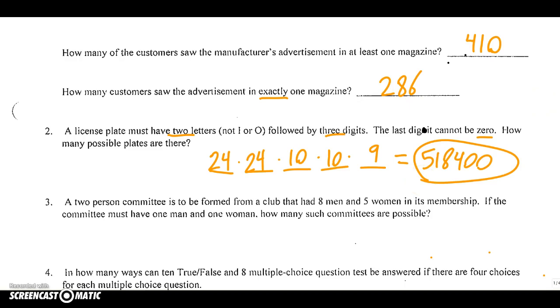Number three, a two-person committee is to be formed from a club that had eight men and five women in its membership. If the committee must have one man and one woman, how many such committees are possible? Please underline the word committee. Remember, committee is one of those keywords that tells you if order matters or not. Order doesn't matter. That means this is a combination question.